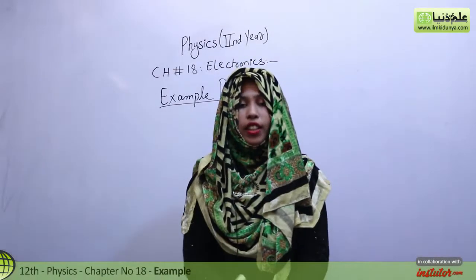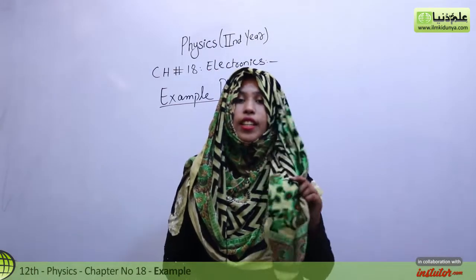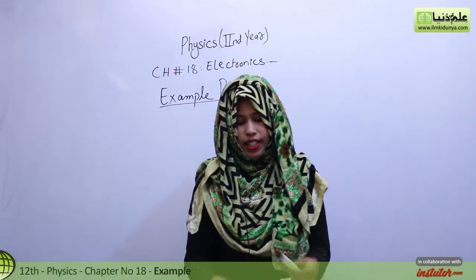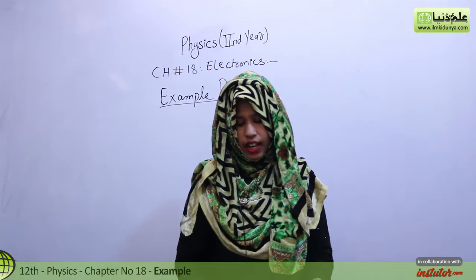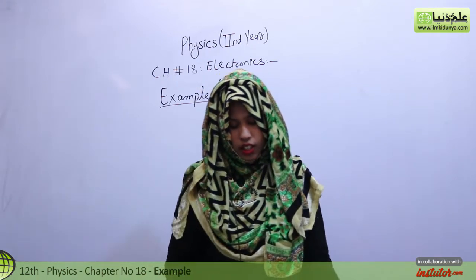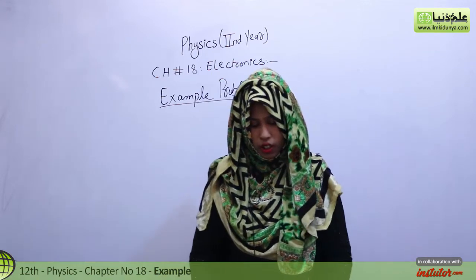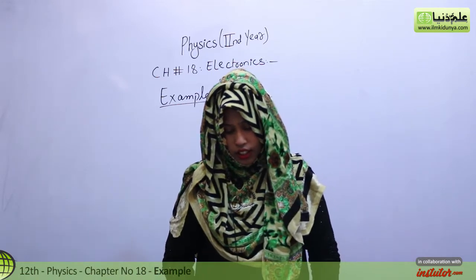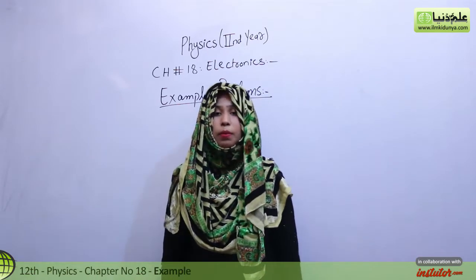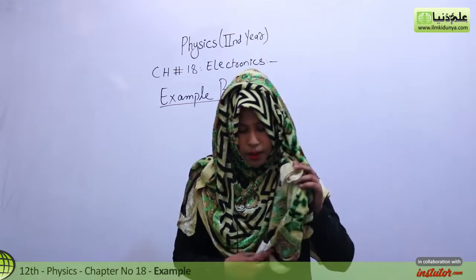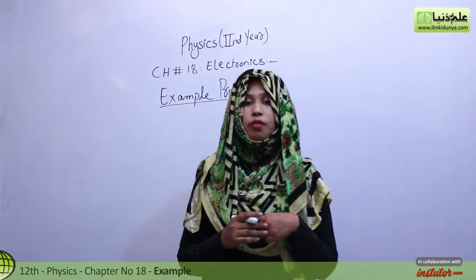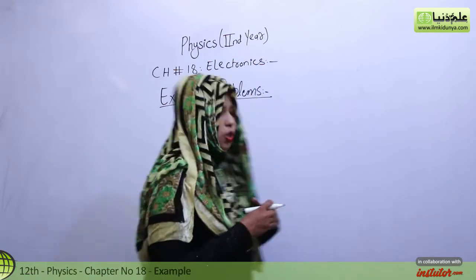Okay students, now let's start with chapter number 18 for example problems. The first example is: in a certain circuit, the transistor has a collector current of 10 mA and the base current of 40 µA. What is the current gain of the transistor? The collector current value is 10 mA given, while the base current value is 40 µA given. Beta, which is the gain factor for the transistor.